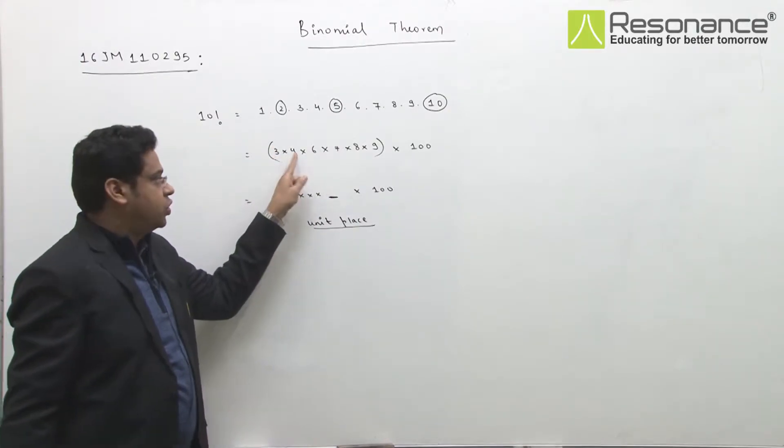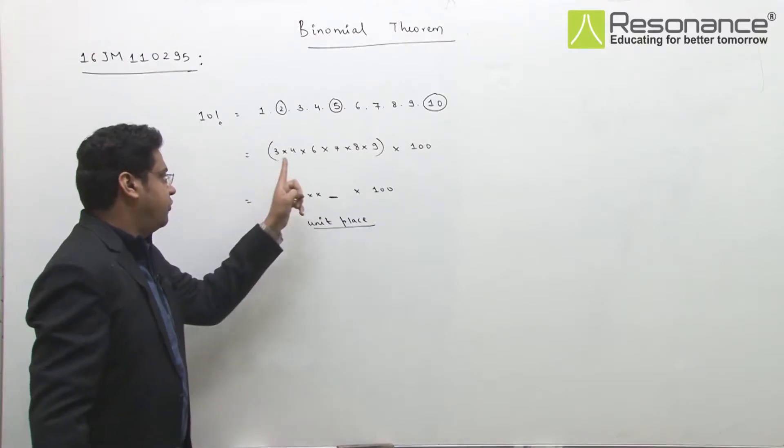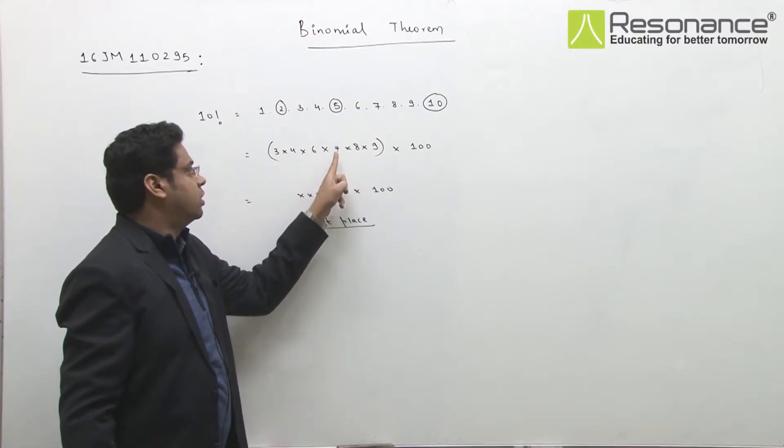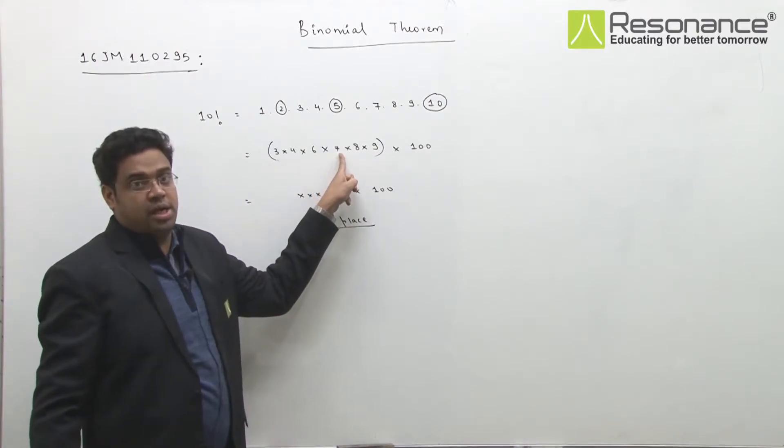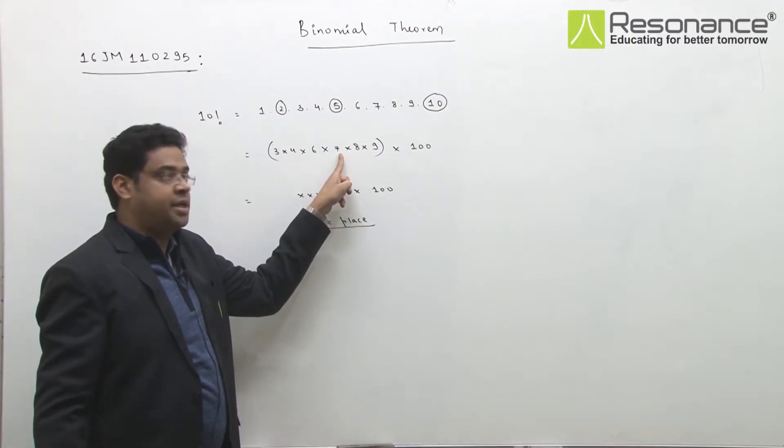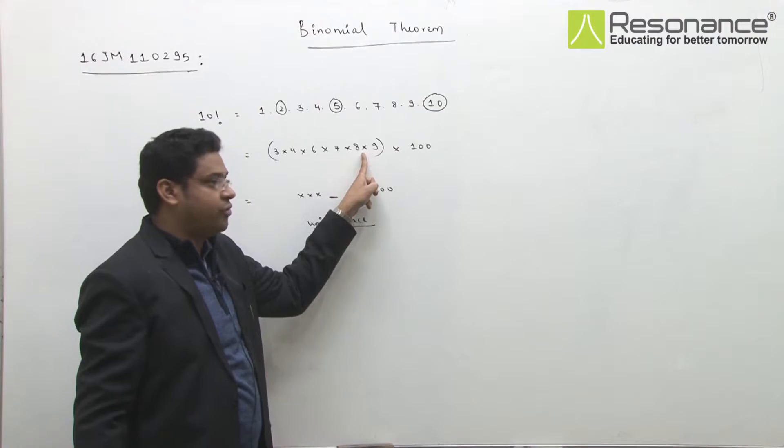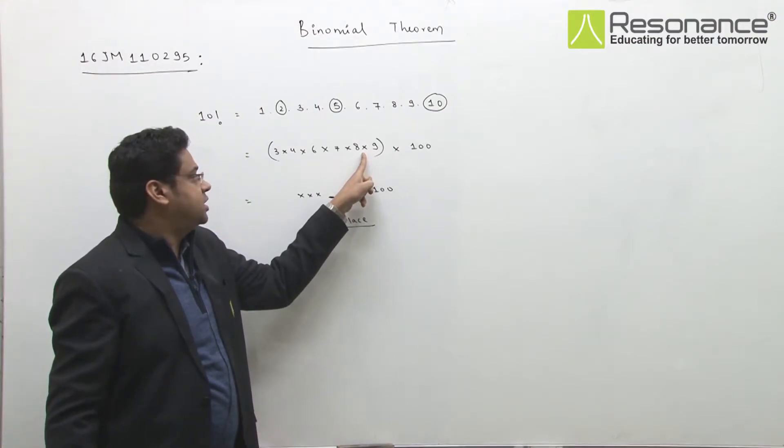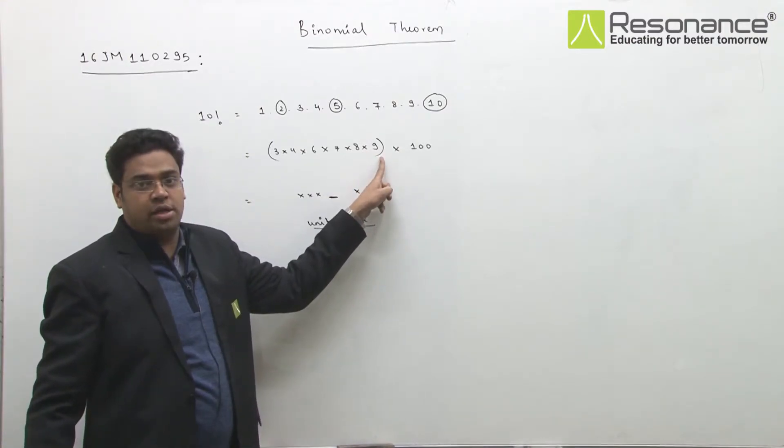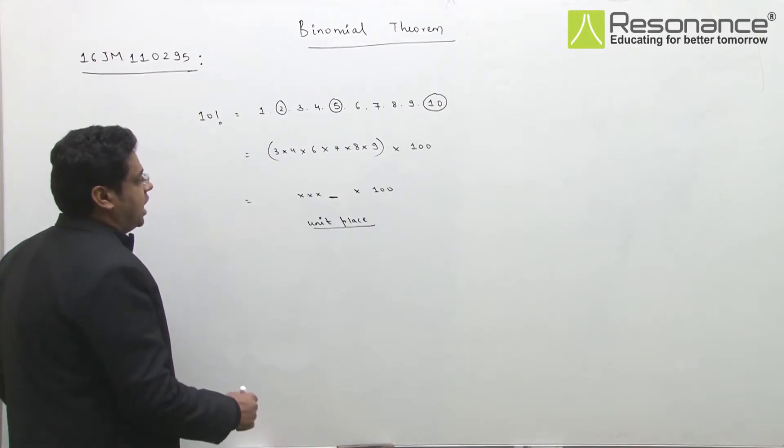So 3 into 4, 12. 12 ka 2. 2 into 6, 24. 24 ka 4. Into 7, 28. Last digit 8. 8 into 8, 64. Last digit 4. 4 into 9, 36. To this last digit.